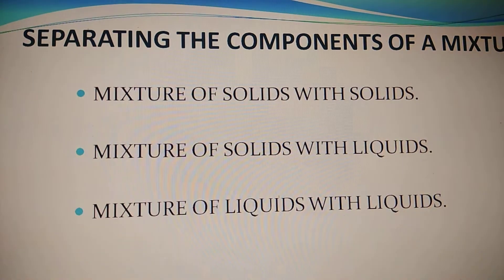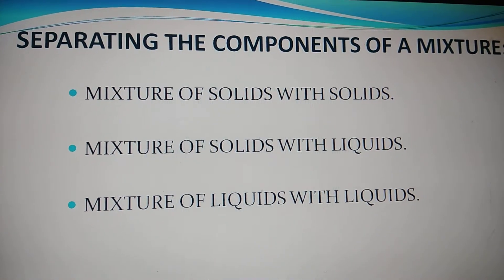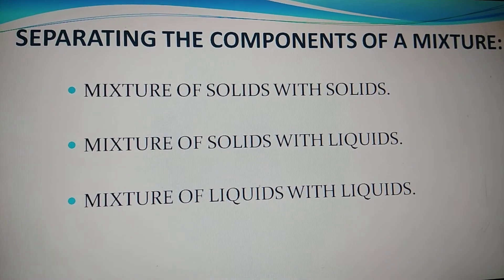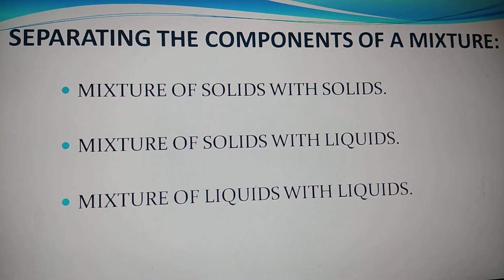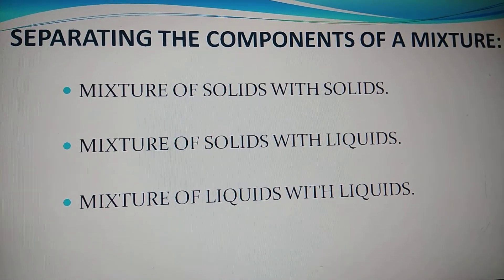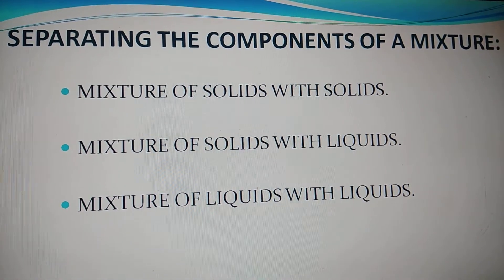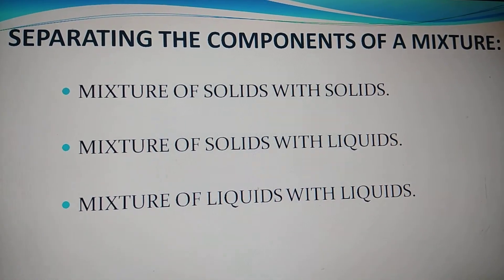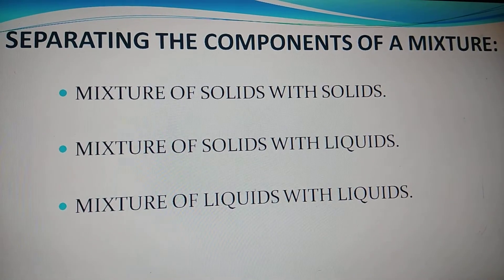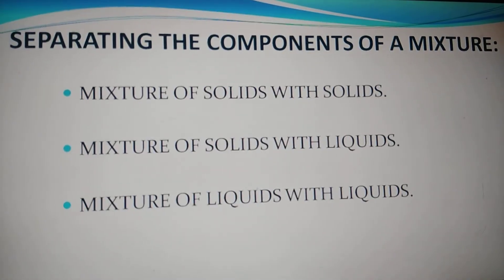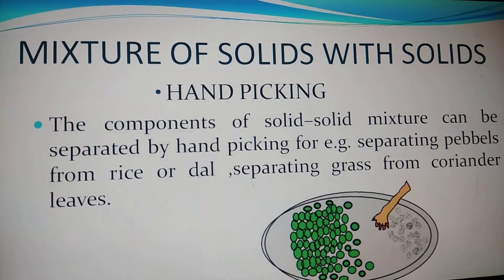These categories are: mixtures of solid with solid, mixture of solids with liquid, and mixture of liquid with liquids. One by one we will go through these methods and discuss the ways used to separate out the different components of a mixture. The first method is for mixtures of solid with solid.